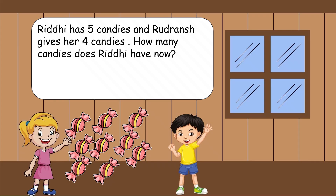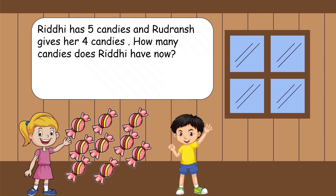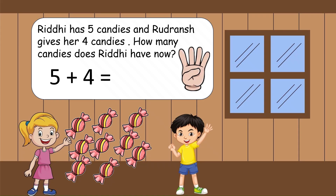Now your time starts. We have to add 5 plus 4. Which one is the smaller number here? 4. Very good. Now open 4 fingers and let's count forward from 5: 6, 7, 8, 9. So, the answer is 9. Riddhi ke paas abhi 9 candies hain.